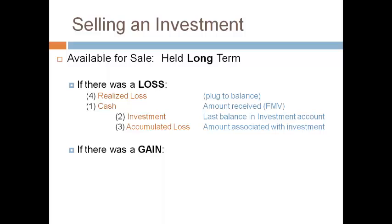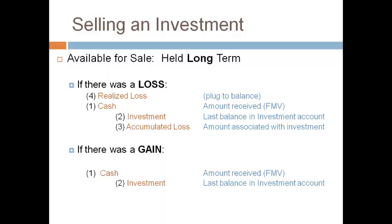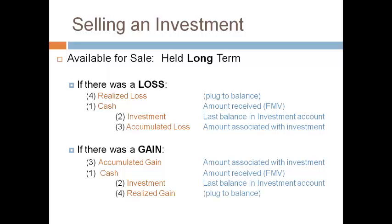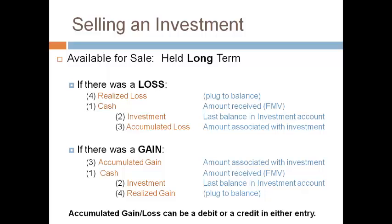To record a gain, follow the same four steps: record cash for the amount received, remove the investment account for the current balance, remove the current balance in the accumulated gain/loss account — assuming the balance is a credit, it takes a debit to remove it — then record the amount required to balance the journal entry as a realized gain. The accumulated gain or loss can be a debit or a credit depending on whether the investment had gains or losses in previous years.